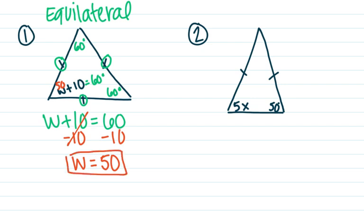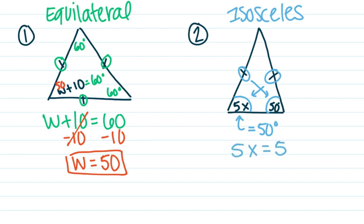Taking a look at number two here, I see two tick marks, which means that this is an isosceles triangle. It has two equal sides, which also means that these angles opposite of these equal sides here are equal. So this angle here is 50 degrees. This angle right here is also supposed to equal 50 degrees. That gives me an equation to work with. 5x is supposed to equal 50 degrees.